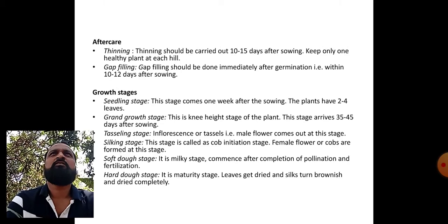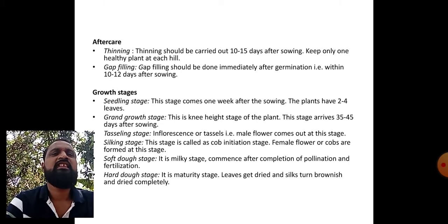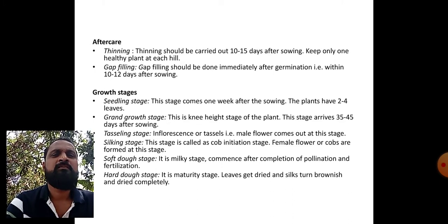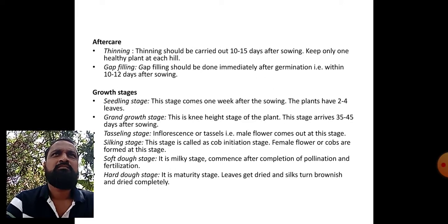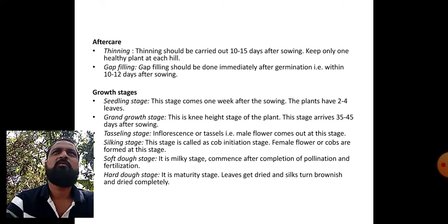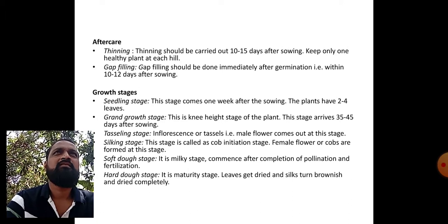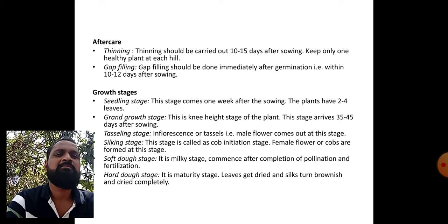After care - thinning and gap filling: these two operations are most important after sowing. If plant population is high, we have to go for thinning after 10 to 15 days after sowing; keep only one healthy plant at each hill at the time of thinning. For gap filling, after germination immediately fill those gaps within 10 to 15 days after sowing.